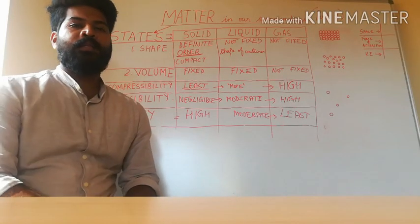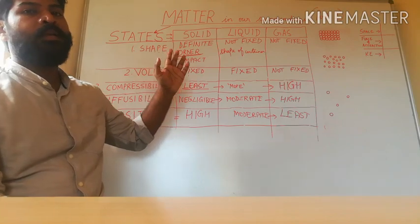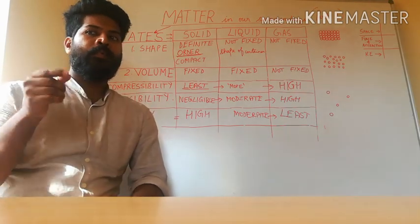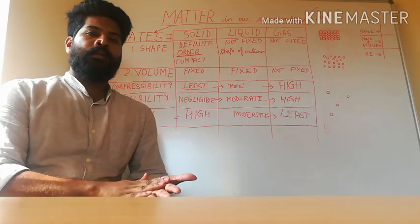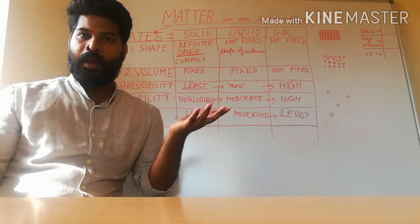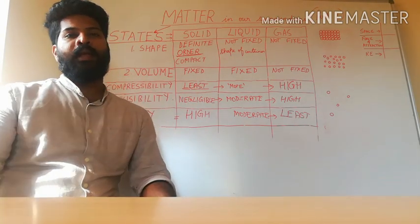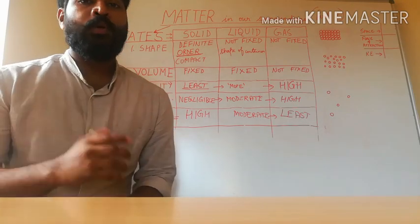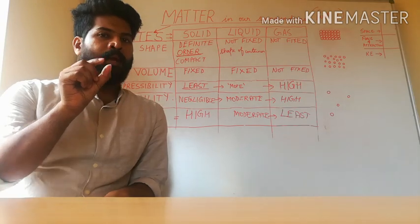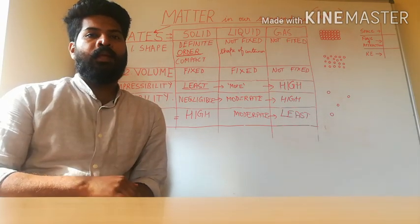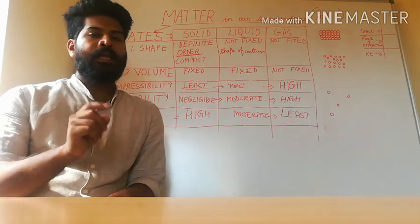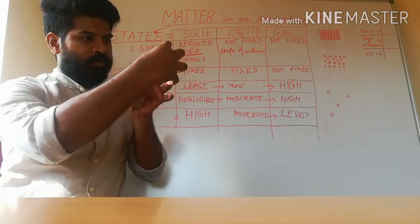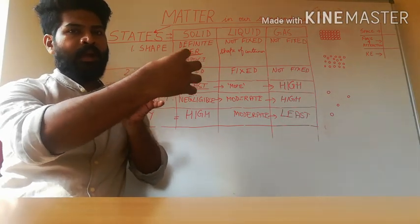Welcome back to another session of Matter in Our Surroundings Part 2. Before we proceed, let us quickly recap our previous class. We understood that everything around us is matter — anything that has mass and occupies volume. Matter is made up of very small particles that are continuously moving, have spaces between them, and exert a force of attraction on each other.